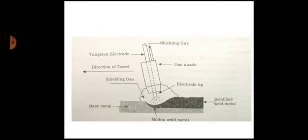This is the diagram for gas tungsten arc welding, GTAW or TIG. Here the tungsten electrode is positioned at the center of the welding torch. You can see that at the center portion of the welding torch, there is a tungsten electrode.